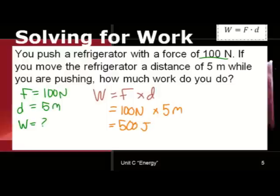Let's see how those units work out. We know that newtons is kilograms times meters per second squared. When we multiply kilograms meters per second squared times meters, we get kilograms times meters squared over second squared, or a joule.